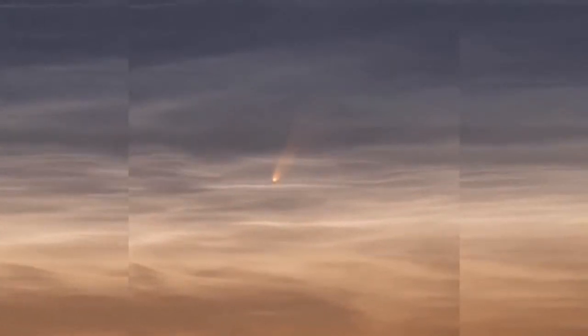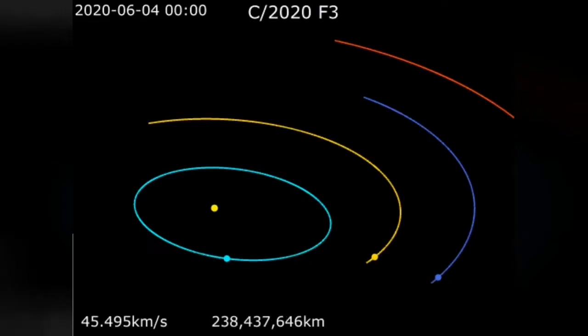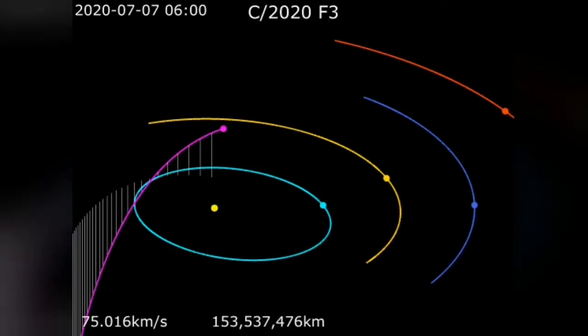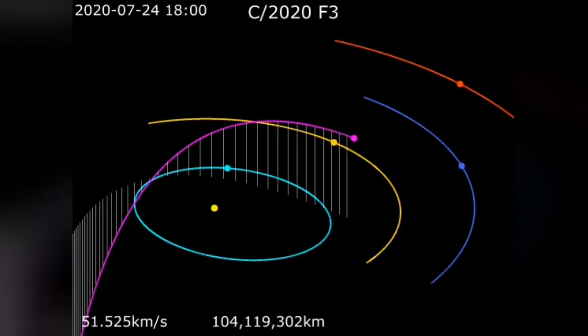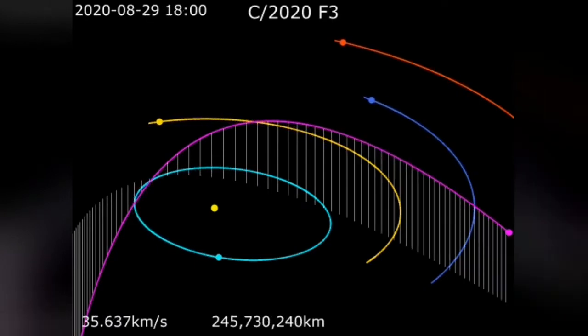Throughout July, Comet Neowise was visible to Northern Hemisphere observers, especially in the UK. Comet Neowise moved through the sky from the northeast to northwest and has now passed its closest distance to Earth. We are waiting for something spectacular to join, and that is that the Earth will pass through the debris of another comet.